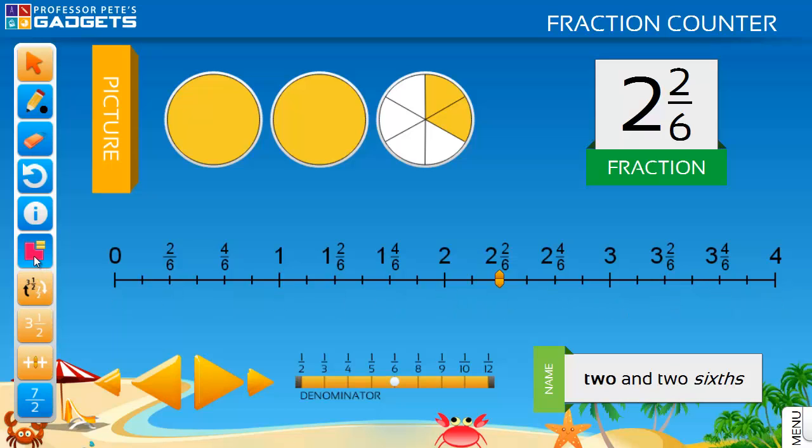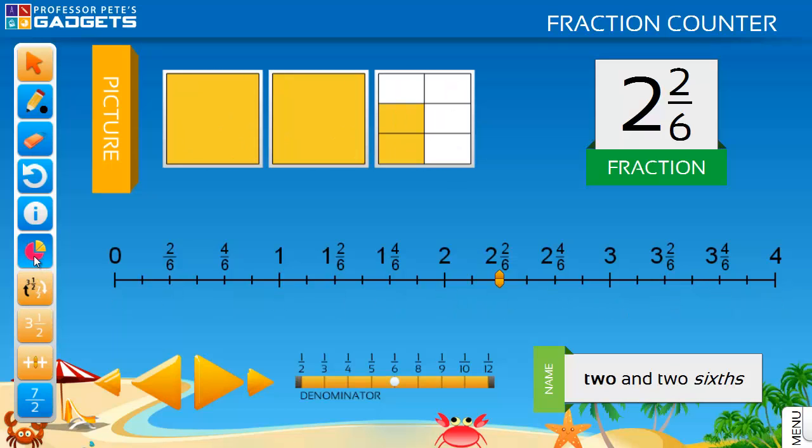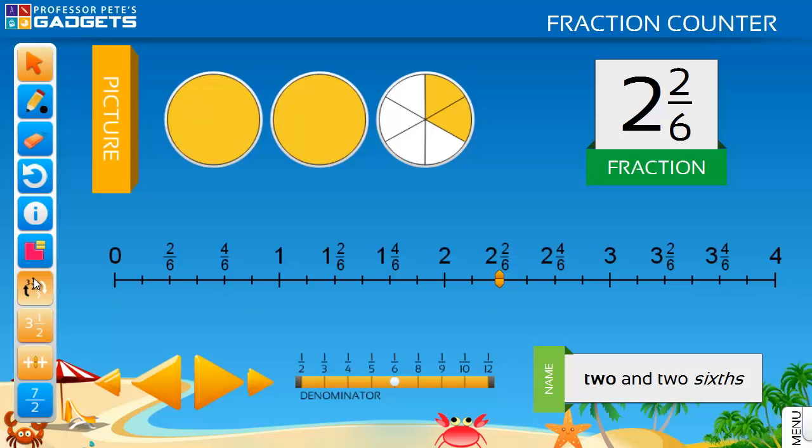The pictures of the shapes can be changed from circles to squares. The main fraction symbol box toggles between both forms of each fraction, improper fractions and mixed numbers.